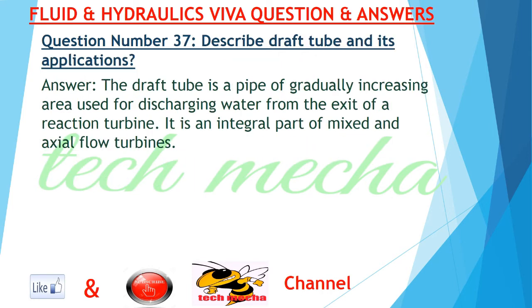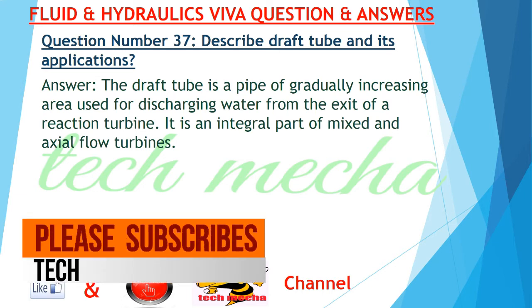Question number 37: Describe draft tube and its applications. Answer: The draft tube is a pipe of gradually increasing area used for discharging water from the exit of a reaction turbine. It is an integral part of mixed and axial flow turbines.